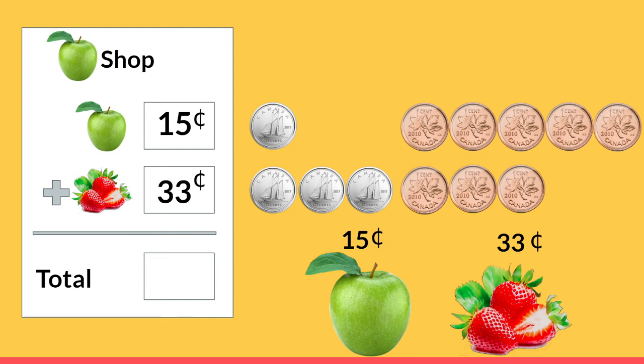When we add these together to find the total, we're going to start with our pennies. We have five plus three — how many cents would that be altogether? That's right, it's eight. And now we're going to add our dimes together. We have one dime and three more dimes, which equals four dimes. We're putting the four in the tens place, which means 40 cents. All together we need to give the cashier 48 cents.